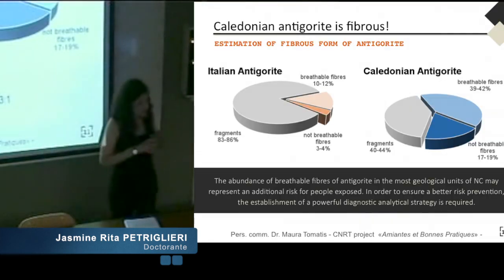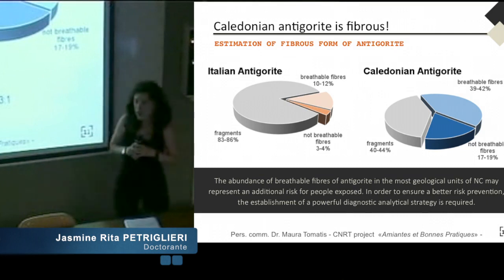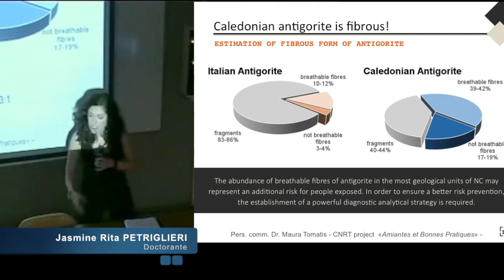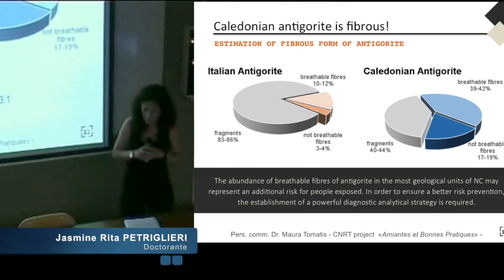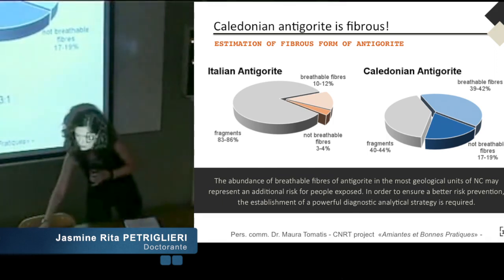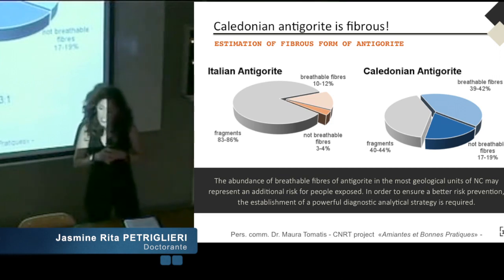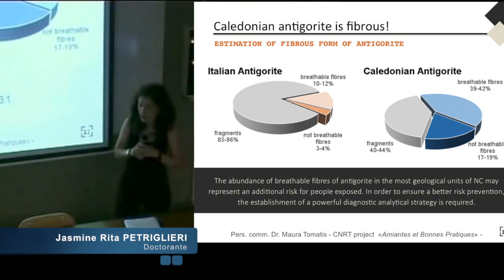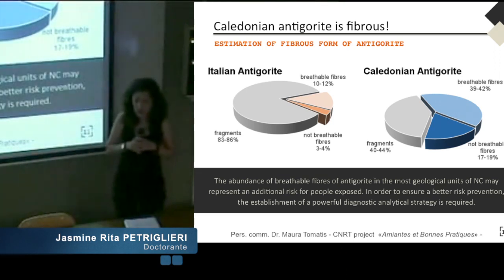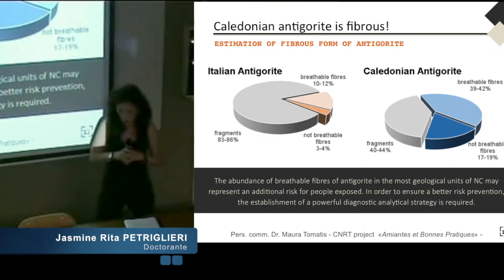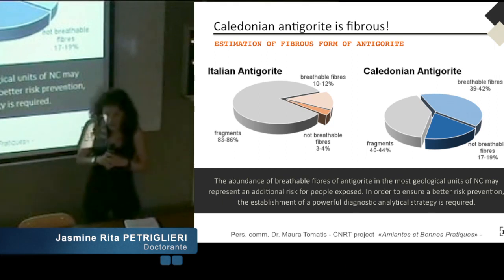We decided to focus our attention on fibrous antigorite for different reasons. The main reason is that New Caledonia legislation is the only one in the world that classifies antigorite as an asbestos, but no complete toxicology data are available at this moment. Recent studies realized at the Scansetti Center have demonstrated that Caledonian antigorite is more fibrous compared to Italian or other antigorites. So the abundance of breathable fibers of antigorite in the geological units of New Caledonia may represent an additional risk for exposed people, and the establishment of a powerful diagnostic analytical strategy is required.